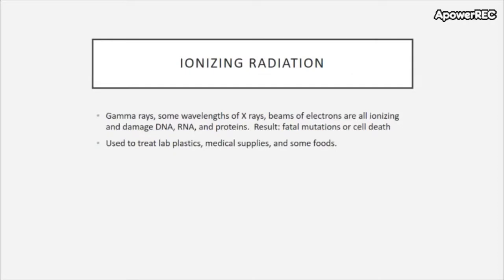Another method for killing microbes is ionizing radiation. These include gamma rays, some wavelengths of x-rays, and beams of electrons. All of these are ionizing — they damage DNA, RNA, and proteins, resulting in fatal mutations or cell death. Fortunately, after the sample has been exposed to these electromagnetic waves, those waves disappear and there is no residual radiation remaining — just like shining a light on a surface and then turning it off. This is really important for treating lab plastics, medical supplies, and some foods.